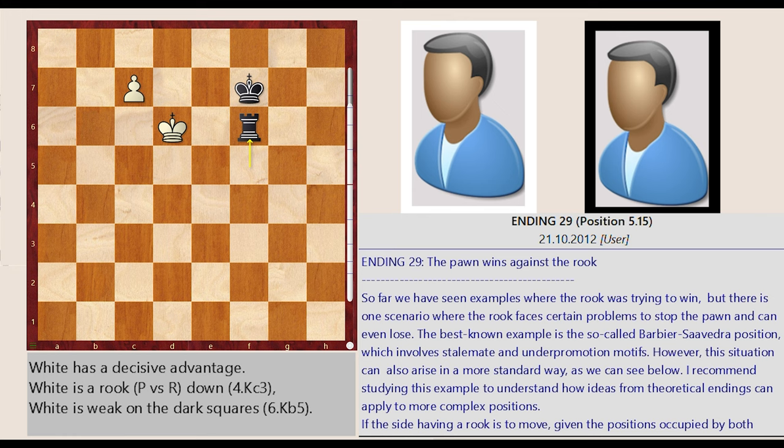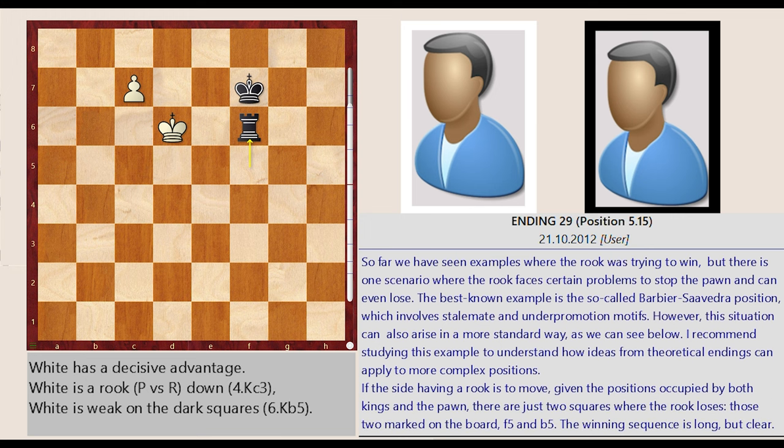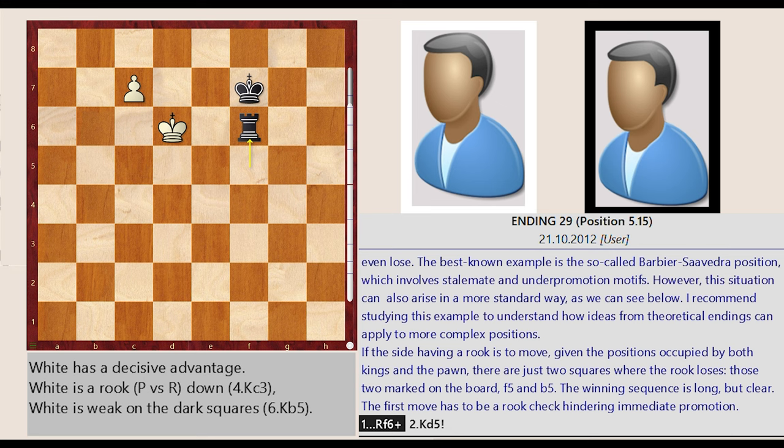If the side having a rook is to move, given the positions occupied by both kings and the pawn, there are just two squares where the rook loses, those two marked on the board, f5 and b5. The winning sequence is long, but clear. The first move has to be a rook check hindering immediate promotion.